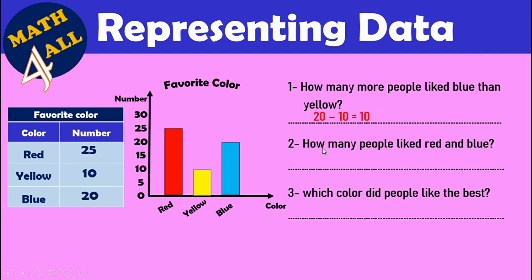The next question: how many people like red and blue? 'Red and blue' means the total — you will add them together. Red is 25 and blue is 20, so 25 plus 20 equals 45.